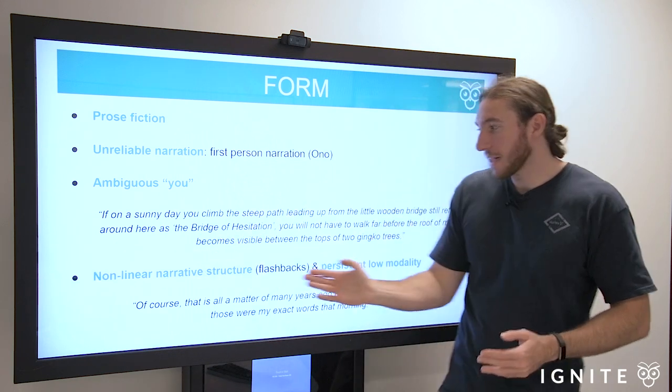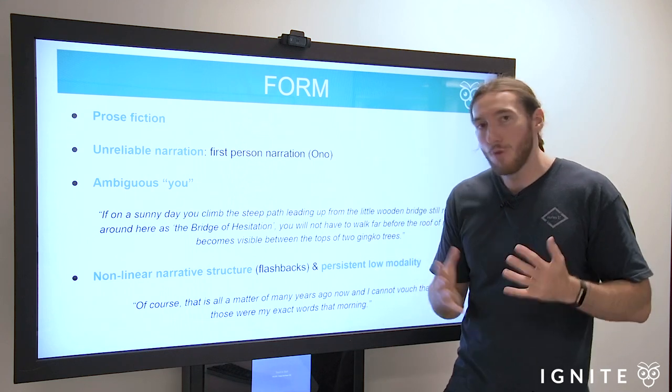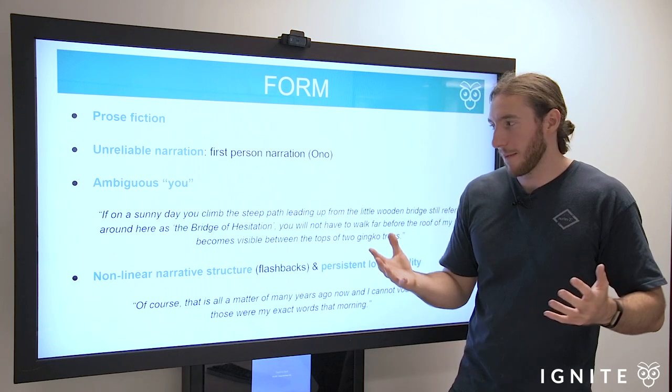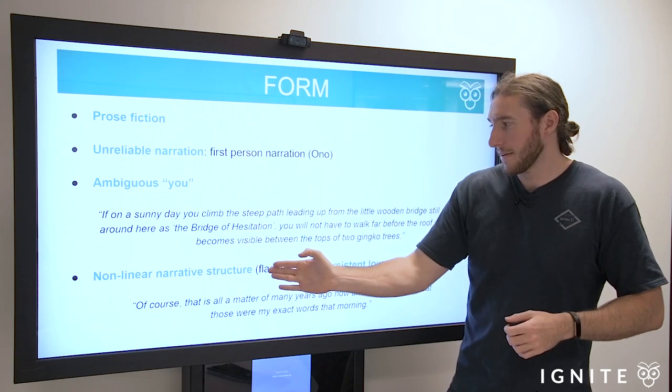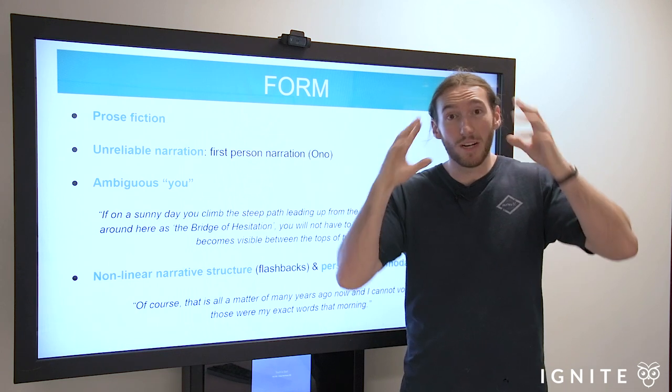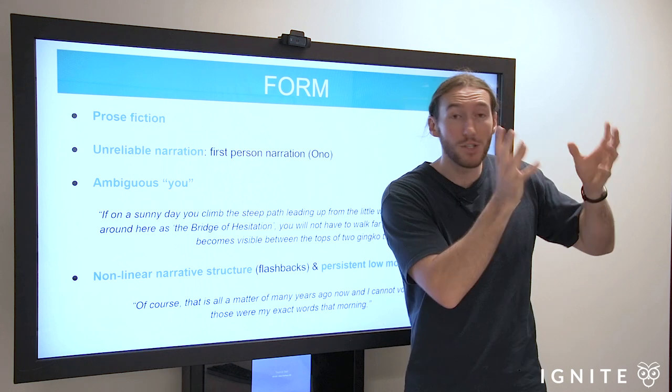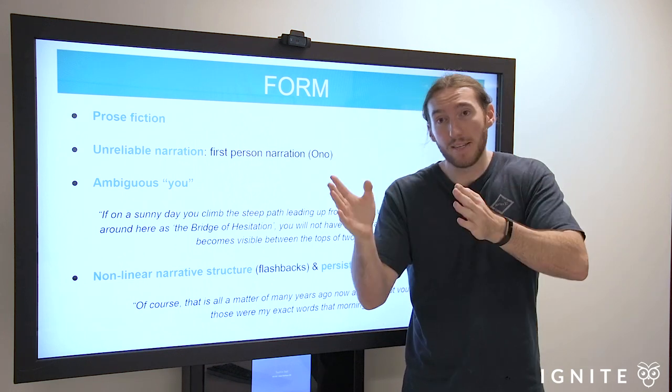Now, the last point here is that we have a non-linear narrative structure. We have flashbacks. We have persistent, low modality. Let's talk about what that means. Non-linear narrative structure means we're constantly going from past to present, past to present, past to present. Switching, switching. He is struggling. Ono is struggling to reconcile the actions of his past with the now present.